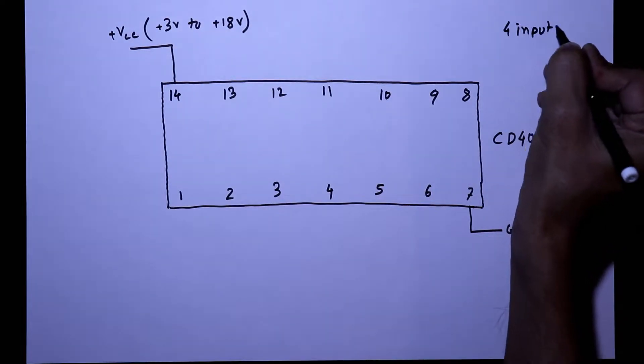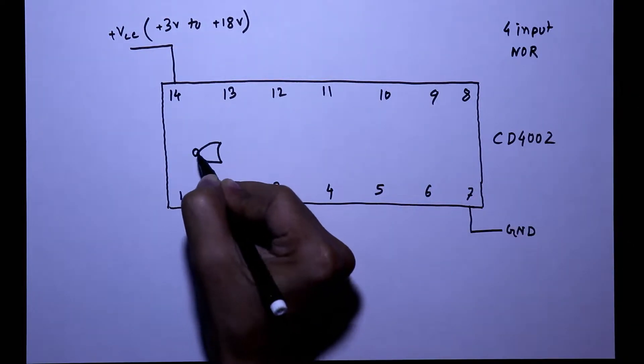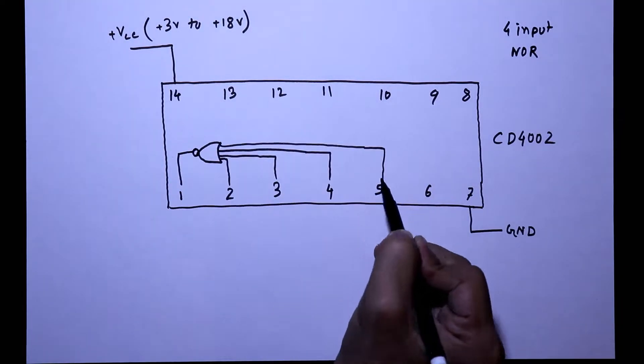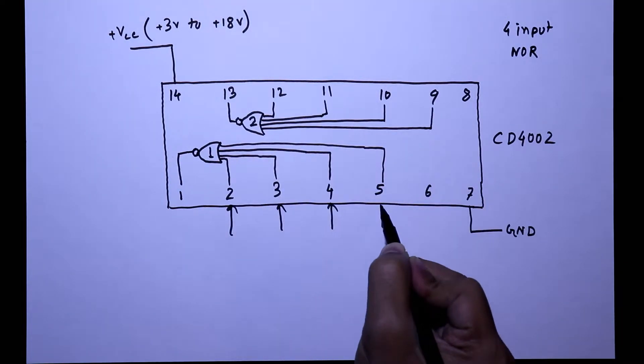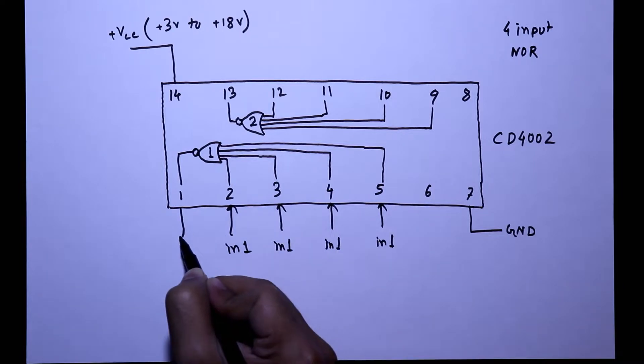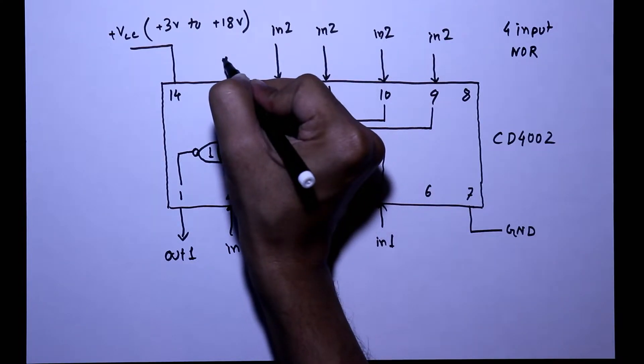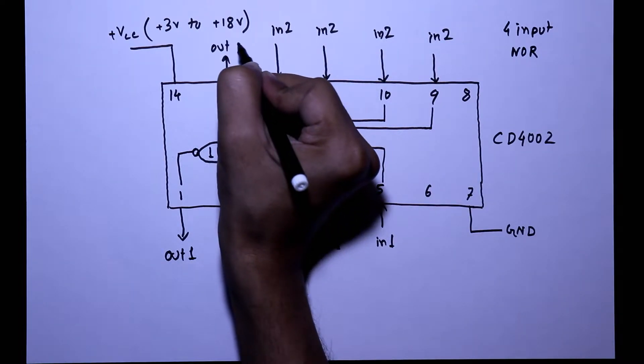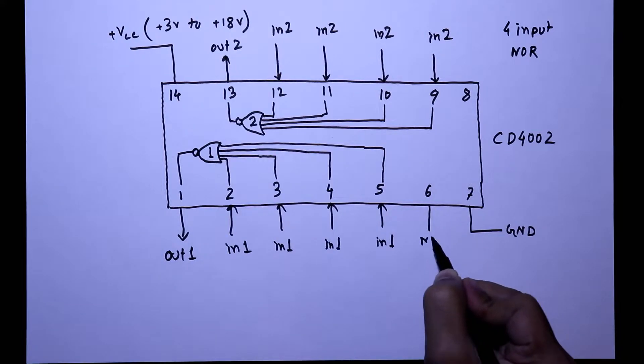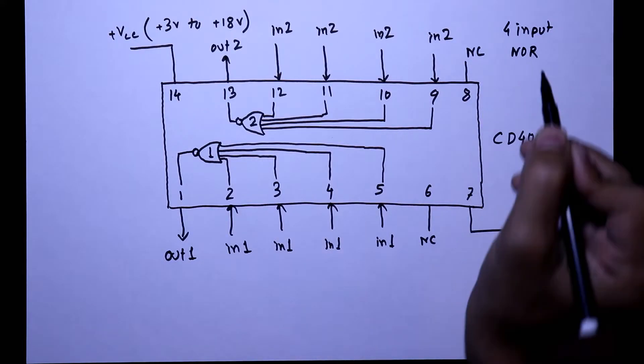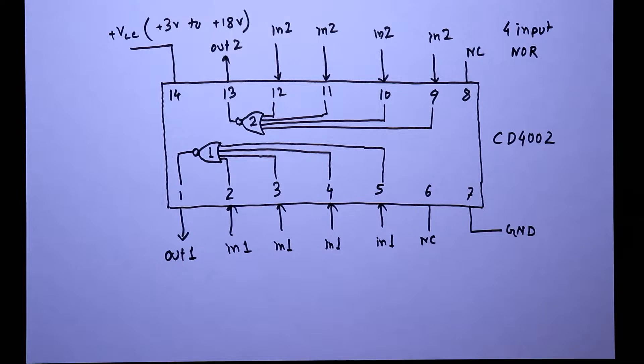This IC is a 4-input NOR gate. It has NOR gate 1 and NOR gate 2. These are all inputs and this is the output of the first NOR gate. These 4 pins are input and this is the output of the second NOR gate. Pin number 6 and 8 are no connection pins. So we don't have to connect anything with these pins. This is the pin diagram of CD4002.